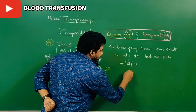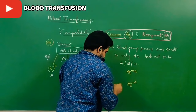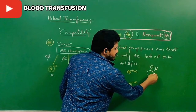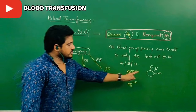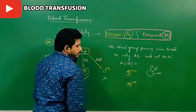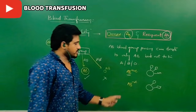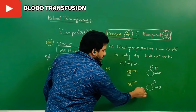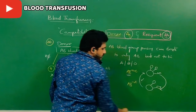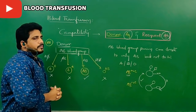If AB positive donates to AB negative: the donor's RBC has antigen A, antigen B, and RH antigen. AB negative has antigen A and antigen B but not RH antigen. When the RH antigen enters the AB negative recipient, reaction takes place — so AB positive cannot donate to AB negative. AB positive is the blood group with the most number of antigens.